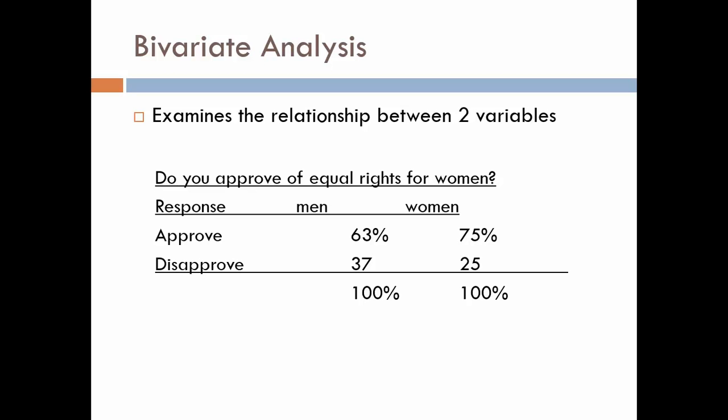For example, do you approve of equal rights for women? This involves two variables: approval of equal rights, and gender — men and women. We're looking at the difference: do men approve of equal rights, and do women approve of equal rights? So the variables in this relationship are gender and approve.